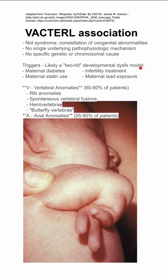The V is for vertebral anomalies, seen in 60% to 80% of patients. This could include rib anomalies, spontaneous vertebral fusions, hemivertebrae, or butterfly vertebrae.